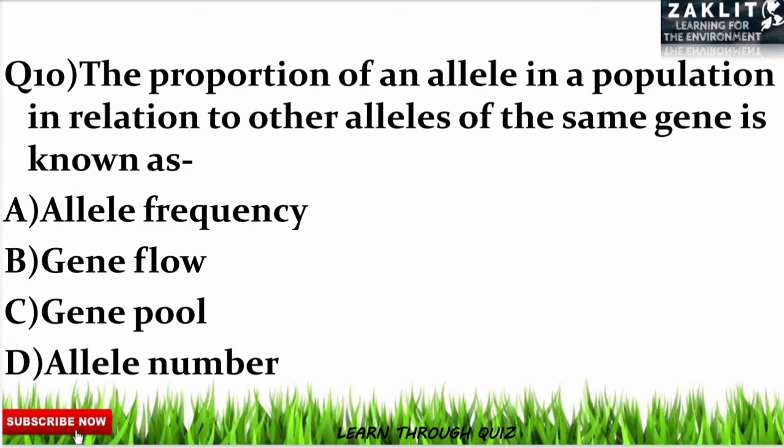The final question was: the proportion of an allele in a population in relation to other alleles of the same gene is known as what? The correct option is A — allele frequency.